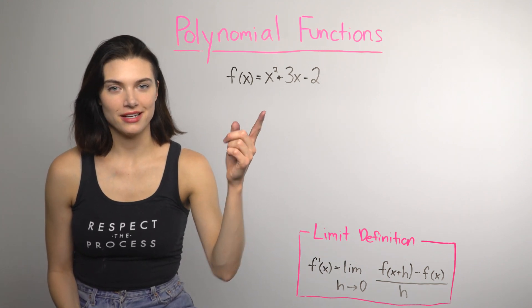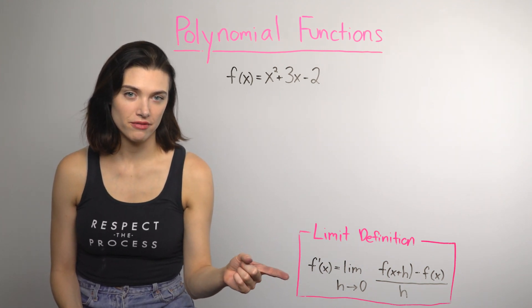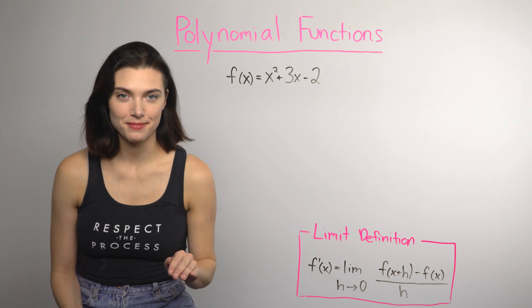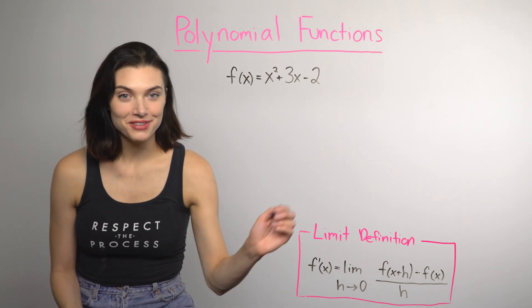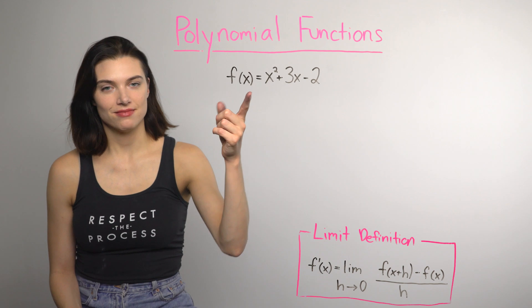Here's a polynomial function, and here's the limit definition of the derivative, which is always the same. Remember, the goal is to rewrite this using this. So, how?